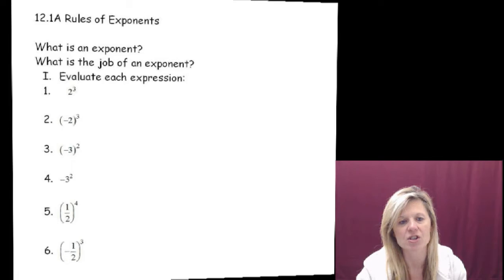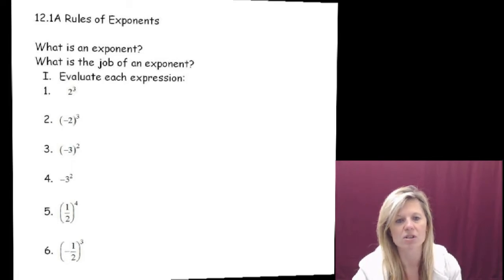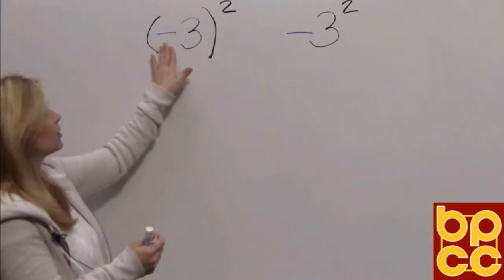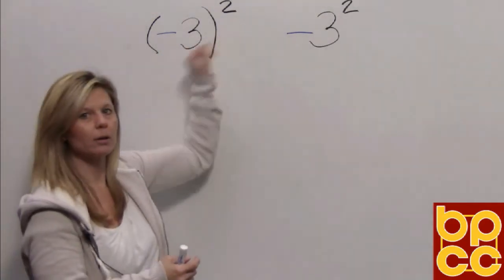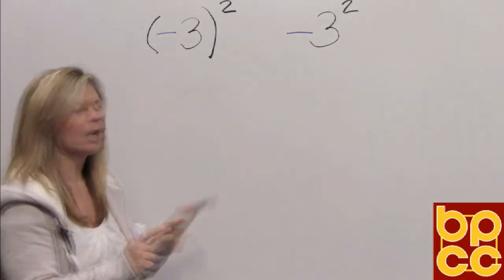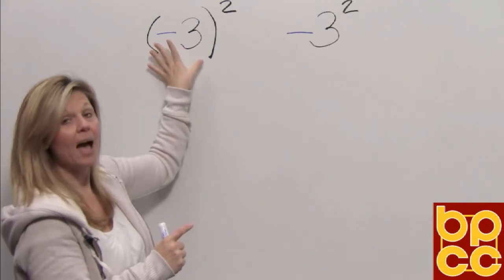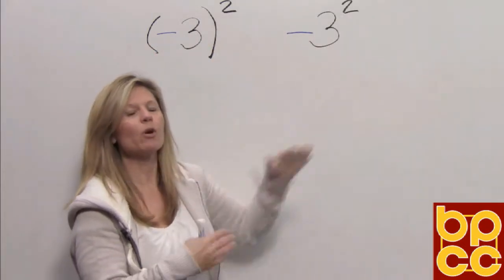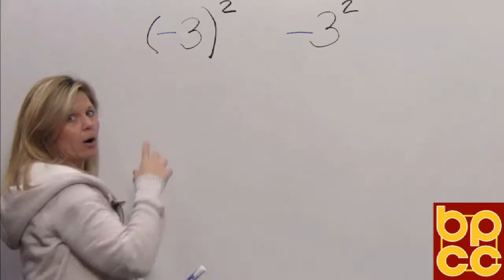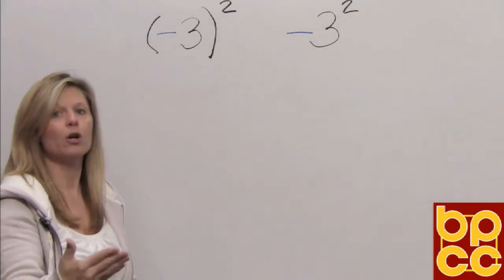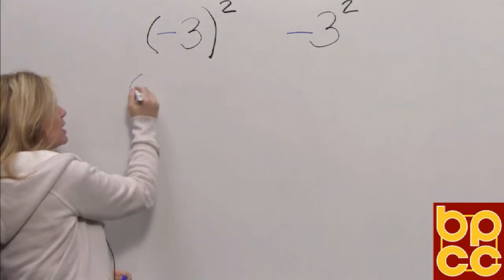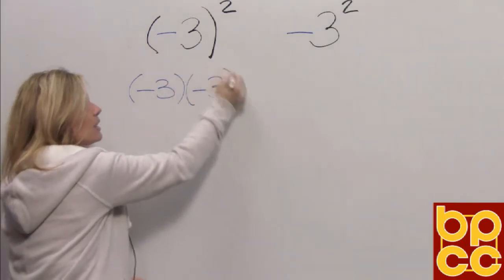Now if you look at expressions 3 and 4, those are the ones that cause the most difficulties, so let's work those out together. We have the expression negative 3 squared. We also read this other expression the same way, negative 3 squared. But if you look, they look different because expression 3 has parentheses in it, where expression 4 does not. The parentheses means when you go to square — which means to multiply something by itself twice — you are not just squaring the number 3, you are also squaring the symbol. So this expression means negative 3 times negative 3.